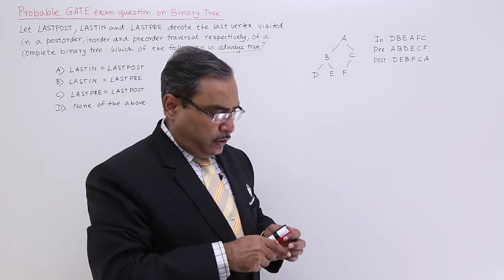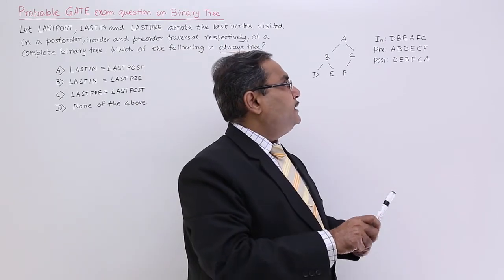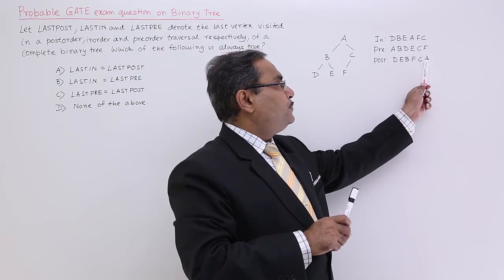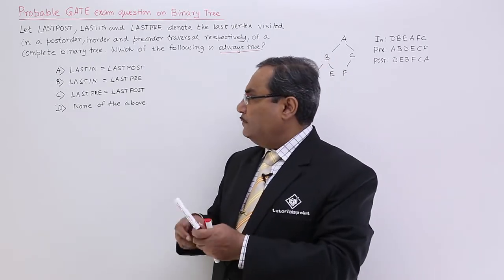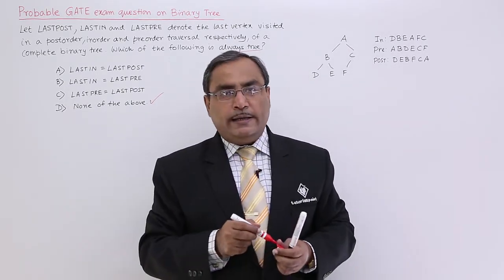So, this is the case. If you consider the last nodes always, then it is LASTIN is C, LASTPRE is F and LASTPOST is A. So, that is why I shall go for the option none of the above because I am not finding any similarity.